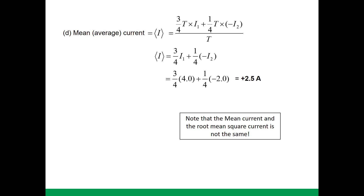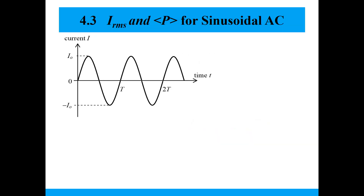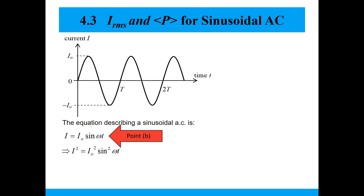For square waves it's easy to square the values. But how do you square a sinusoidal wave? I is given by I = I₀ sin(ωt), so I² = I₀² sin²(ωt). Before graphing calculators, you would use the identity sin²(ωt) = ½(1 − cos(2ωt)). Those of you sharp with mathematics can immediately process that sin²(ωt) is ½ times (1 − cos(2ωt)). I'm going to prove this and sketch the graph from basic principles.